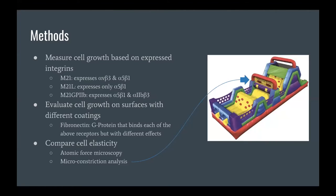They wanted an alpha 2b beta 3 integrin. They used this property in different experiments to show how they could basically replace the alpha v beta 3 with the alpha 2b beta 3 integrin and see the effects that that had.